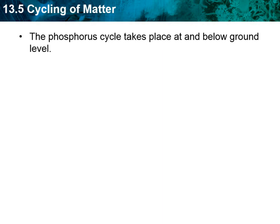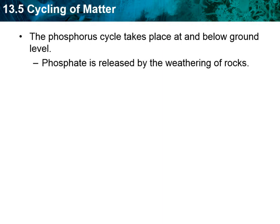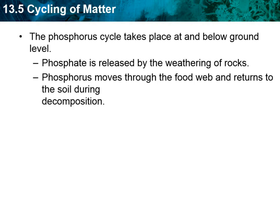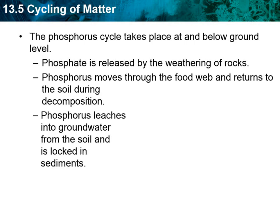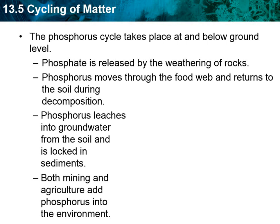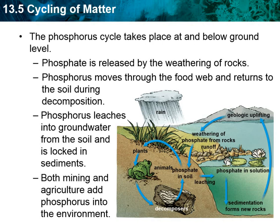In the phosphorus cycle, which takes place at or below ground level, phosphate is released by the weathering of rocks. Phosphorus moves through the food web and returns to the soil during decomposition. The phosphorus leaches into groundwater from soil, rocks, and sediments. Both mining and agriculture add phosphorus to the environment. Plants use it, and animals consume the plants to get the phosphorus they need.